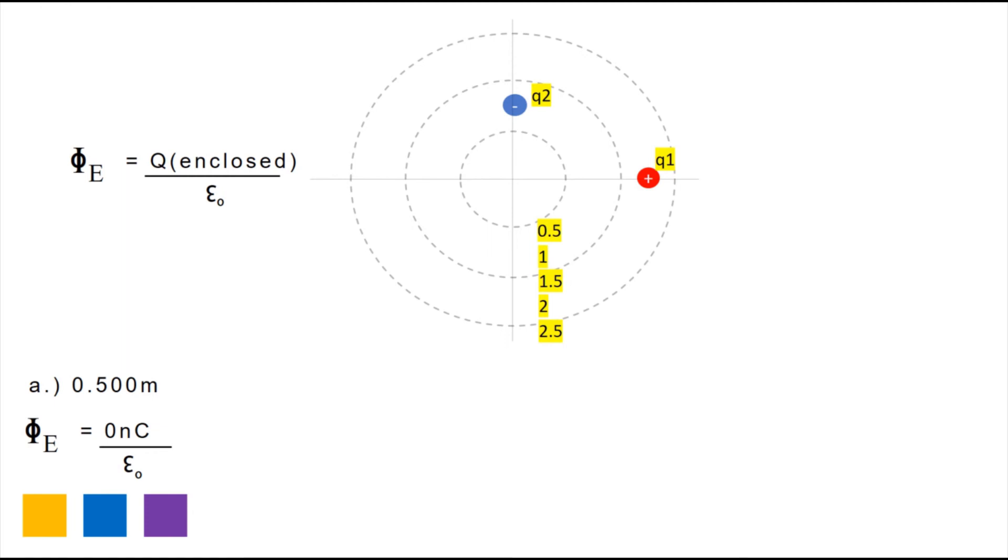For the second part, or the 1.50 meter radius, you can see that Q2, or the second charge, is enclosed, which means that the electric flux for this surface will be equal to negative 6 nC over epsilon 0.